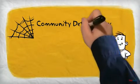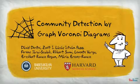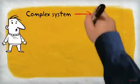We present a novel community detection algorithm using graph Voronoi diagrams. Many complex systems can be represented as networks.